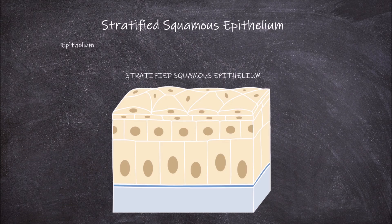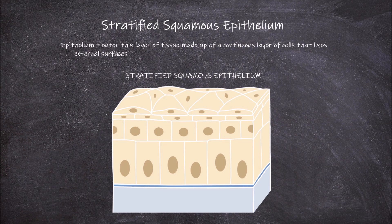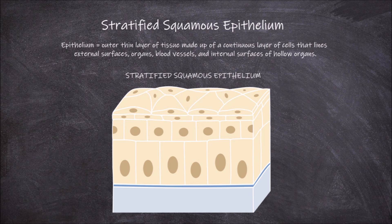The epithelium is the outer thin layer of tissue made up of a continuous layer of cells that lines the external surfaces of the body, organs and blood vessels, in addition to the internal surfaces of the hollow organs within the body. There are several types of epithelium found lining the surfaces of the body.